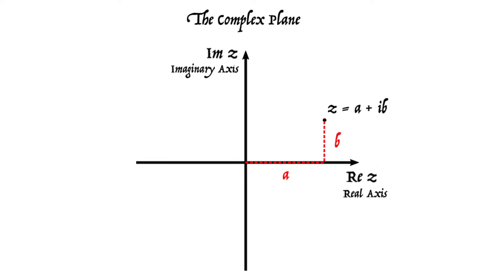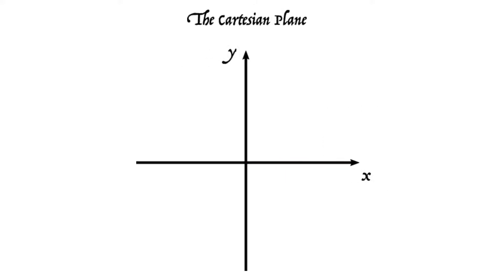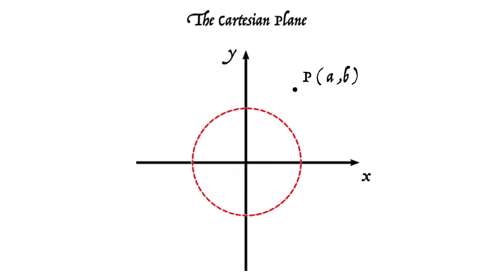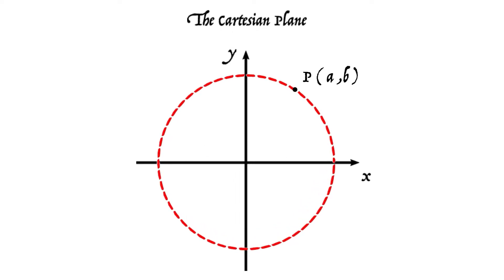Let's go back to the Cartesian plane and look at a point that lies at a distance one from the origin — it lies on the unit circle. Its coordinates are a along parallel to the x axis and b parallel to the y axis. Now let's consider all points that are at a unit distance from the origin. There they are, and P is included in that.